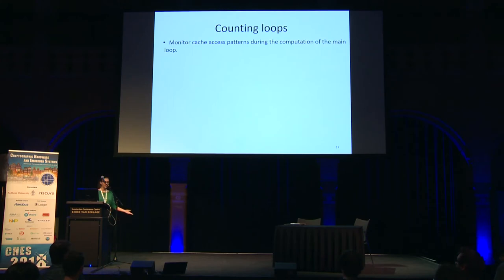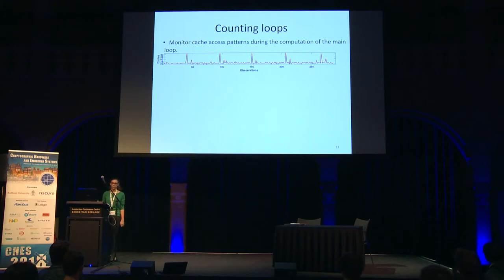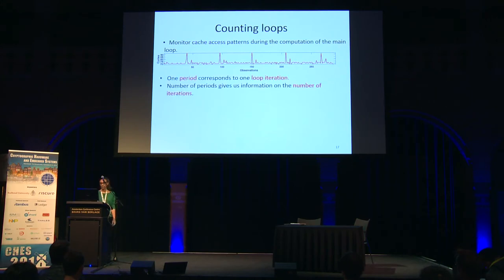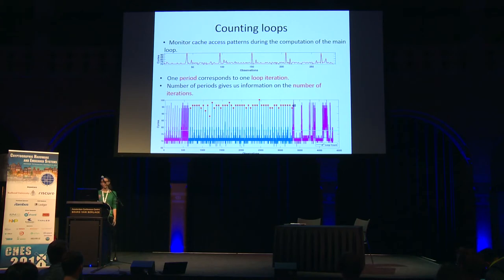We count loop iterations using the Prime and Probe attack by monitoring cache access patterns during execution of the algorithm. We obtain traces of a constant pattern separated by peaks. Each constant segment corresponds to one loop iteration, and counting the peaks tells us how many iterations occurred. For example, in the blue portion of a sample trace, we count 48 peaks, meaning the algorithm executed 48 iterations.